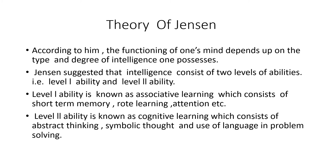Now let's get into the theory. Jensen says that the function of the mind actually depends upon the type and degree of intelligence one has. Jensen says intelligence consists of two level abilities: Level 1 ability and Level 2 ability.